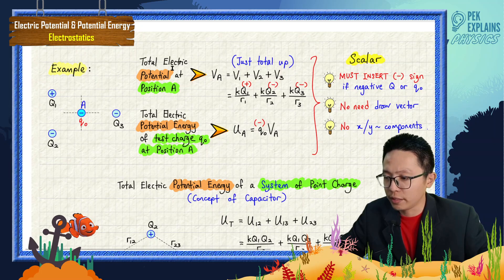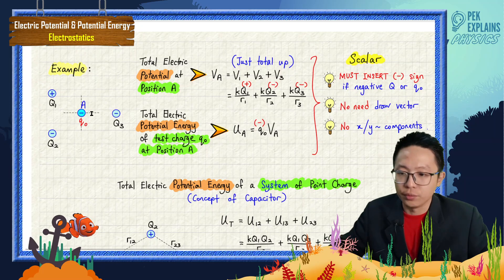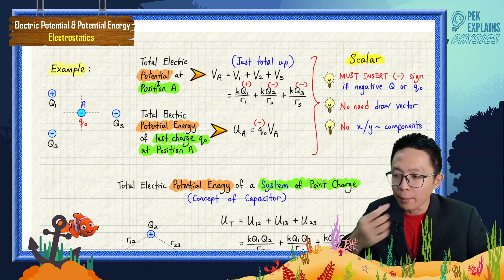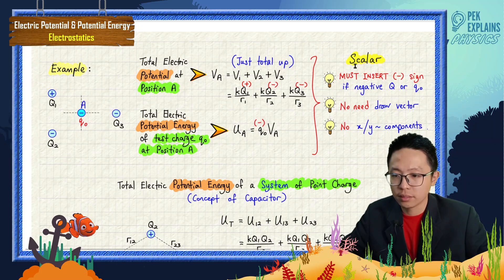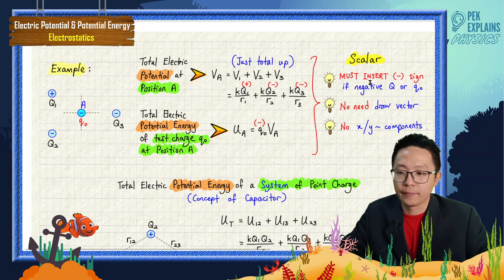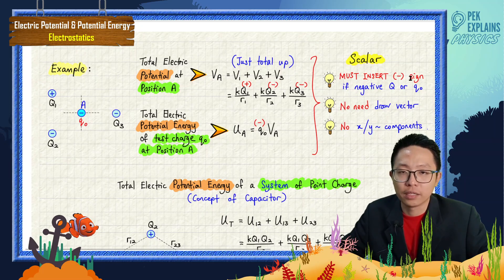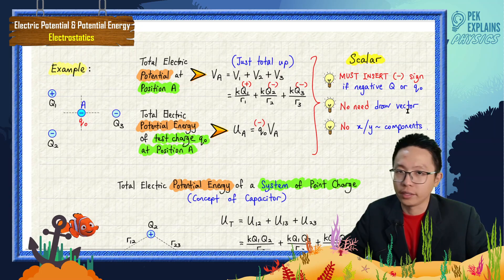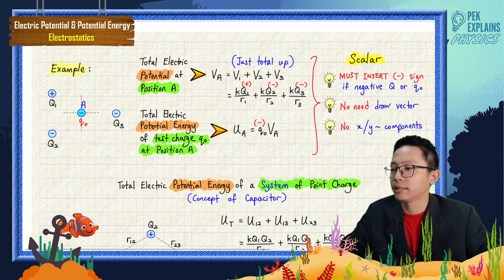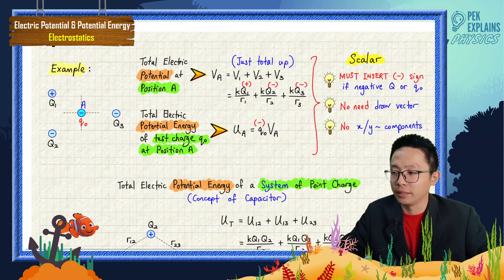If I want to find the total electric potential at position A, potential is a scalar quantity. For the charge, you must insert the negative sign if it is a negative charge. No need to draw a vector diagram. Unlike the electric field and electric force — that one is a vector.